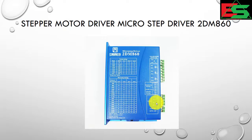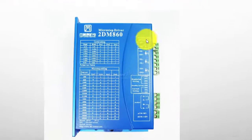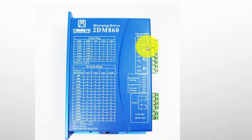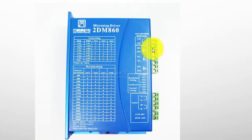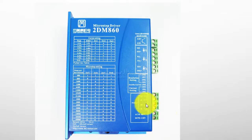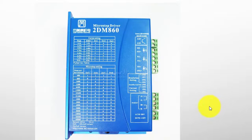In this lecture we will use the 2DM860 stepper motor driver, also called a microstep driver. You can see the connection strip - by this strip we will connect with the PLC for pulse, direction, and enable signals. This connection will be connected to the motor: A-plus, A-minus, B-plus, B-minus. It connects to the stepper motor, and these are the DIP switches.